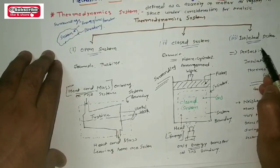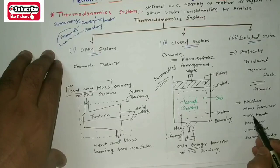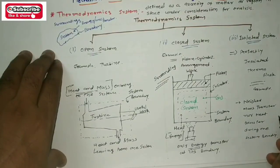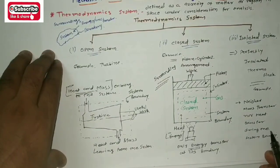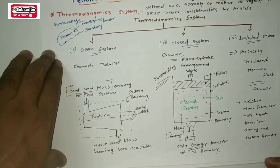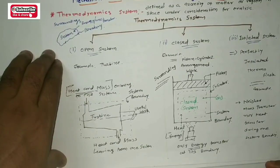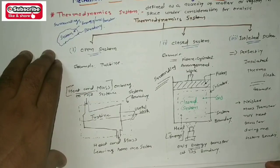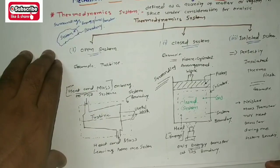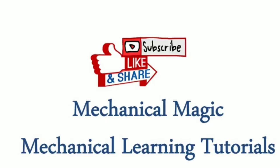The third one, isolated system: neither mass transfer nor energy transfer occurs between the system and surroundings in any direction. I think you understand this basic knowledge about thermodynamics — systems and surroundings — and examples of open system, closed system, and isolated system.